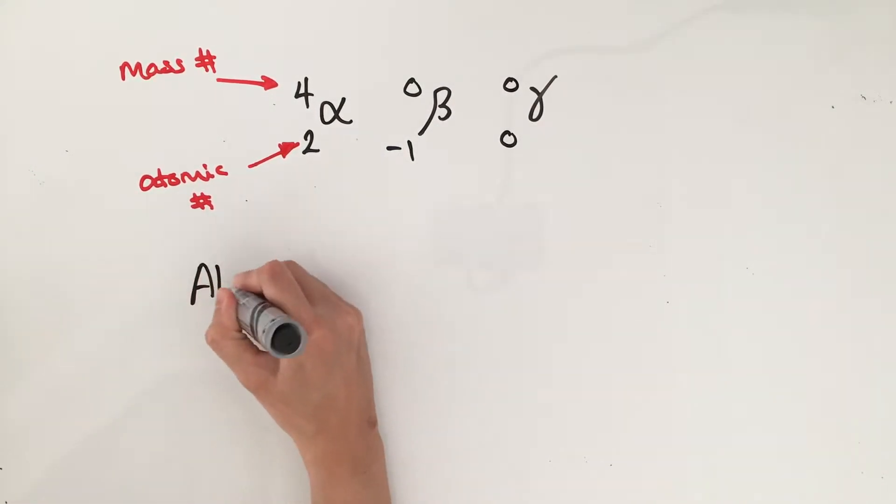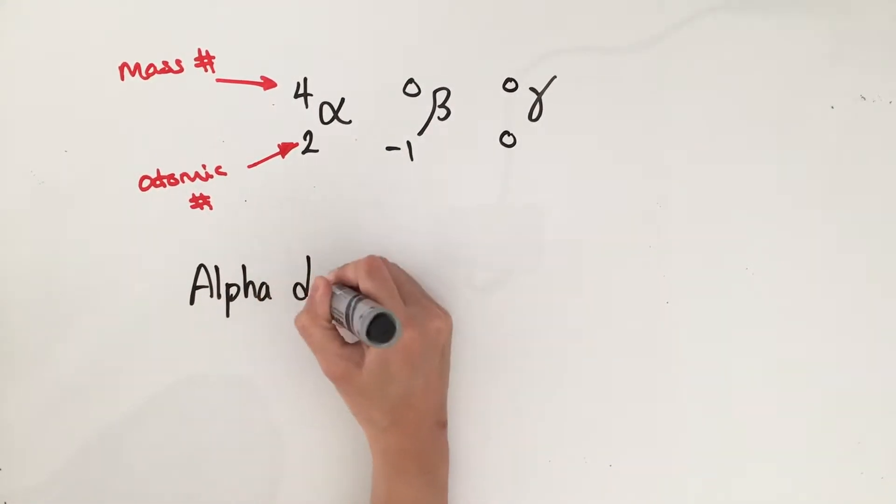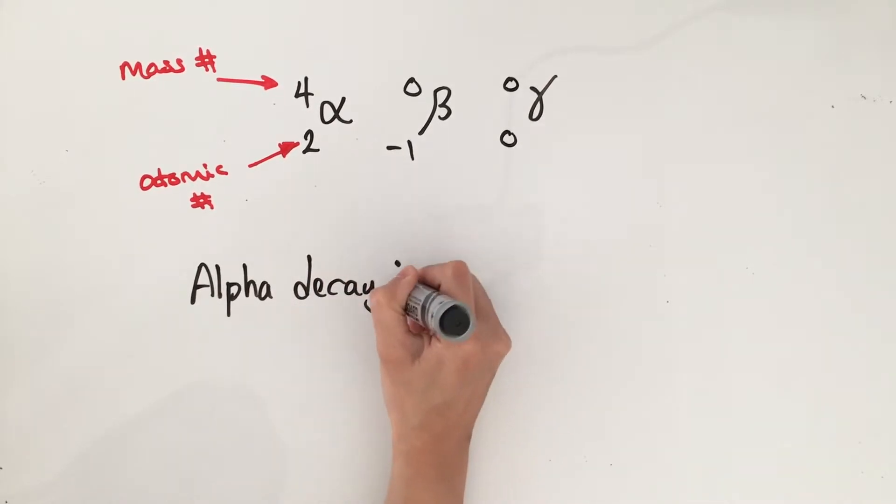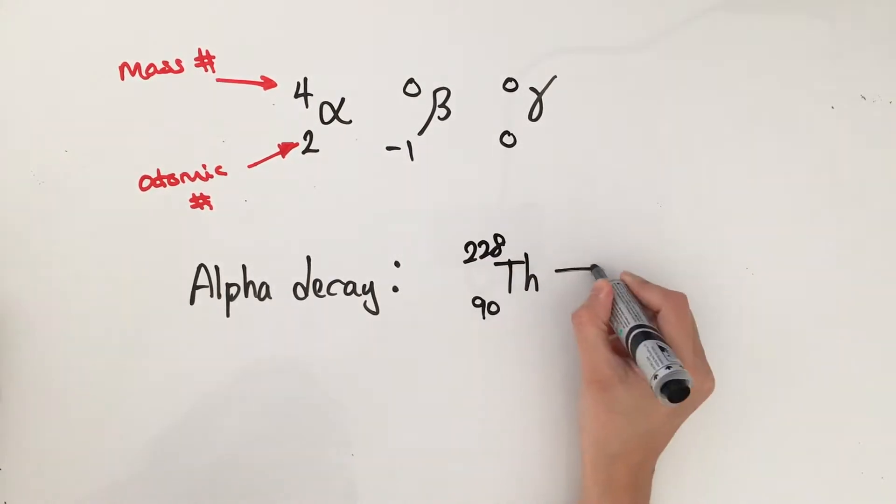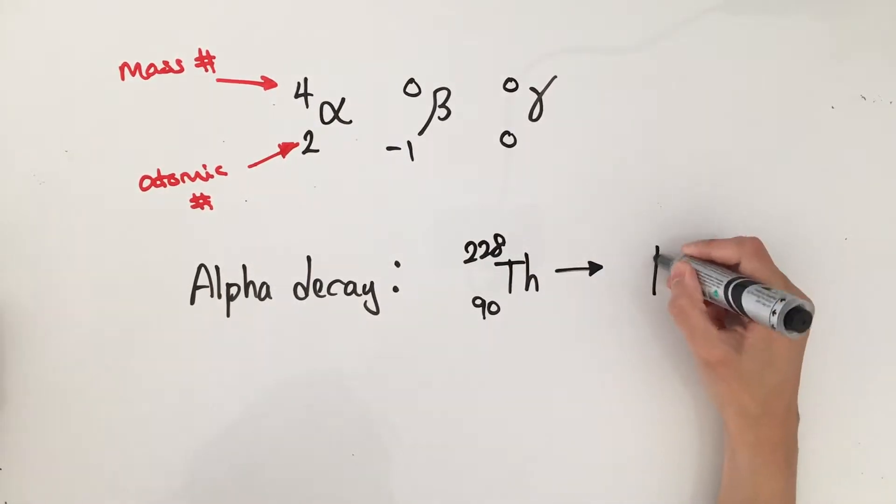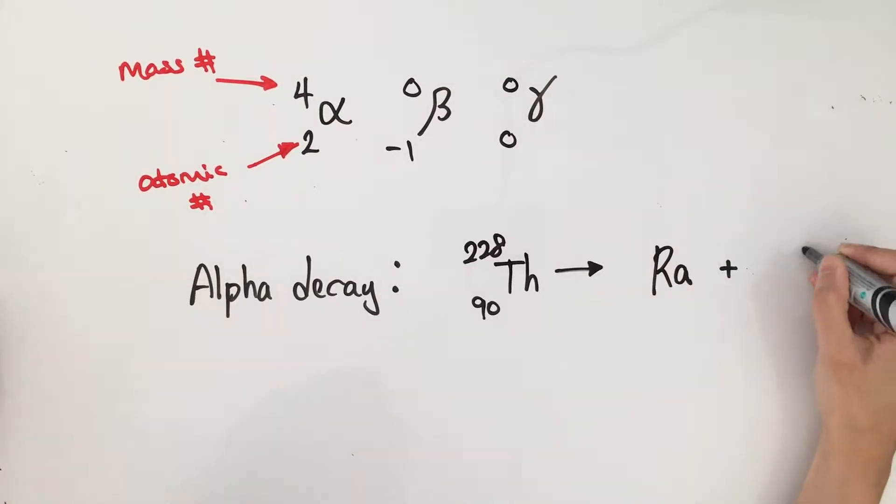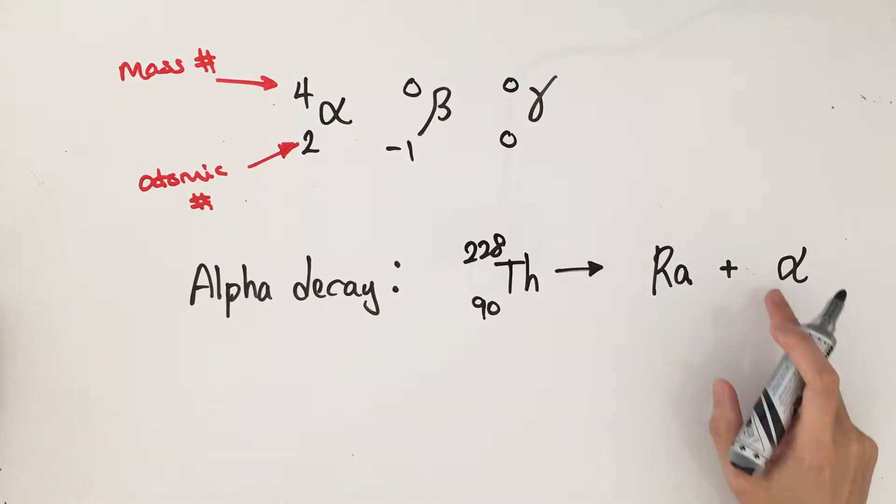Let me give you an example of alpha decay. The left-hand side of the equation is the elements that we start with. We start with thorium, and it decays into radium via alpha decay. So in the exam, they are likely to leave the atomic number and mass number on the right-hand side of the equation blank, and you have to fill those in.